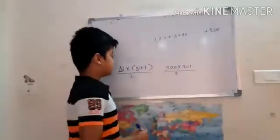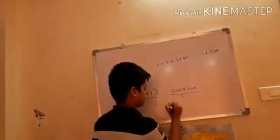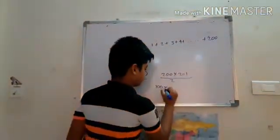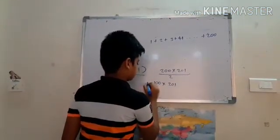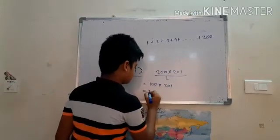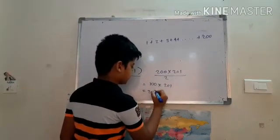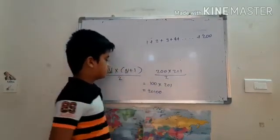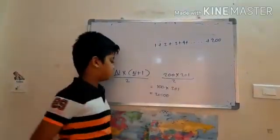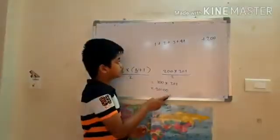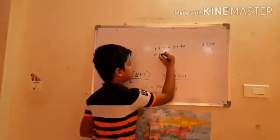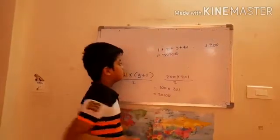Simply 200 by 2. 100 into 201. So, this is the sum of the numbers up till 200. 1 plus 2 plus 3 plus 4 plus 200 equals 20,100.